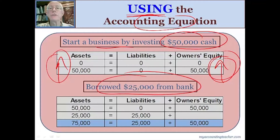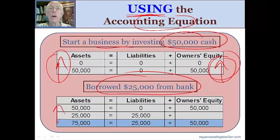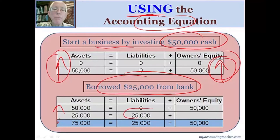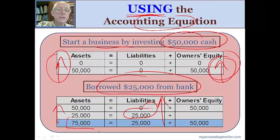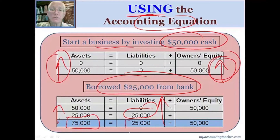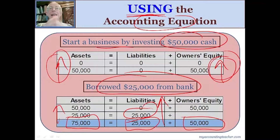Borrowed $25,000 from a bank. Again, an asset came into the business — $25,000. Where did it come from? Was it invested by the owners? No. We borrowed it, so liabilities go up. Now if we do a total, we see that total assets are $75,000. Where did we get that $75,000 in assets? $25,000 was borrowed, and $50,000 was invested by shareholders. The accounting equation is keeping us straight, making sure we record everything.